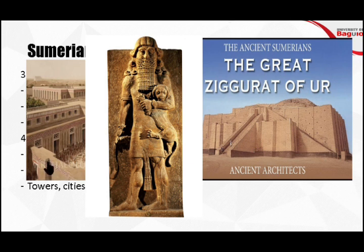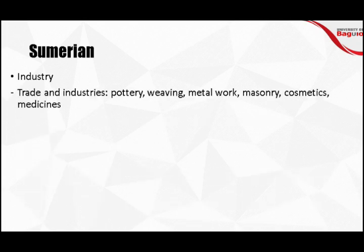Sumerians were also good in industry. They already introduced the concept of trade, and were skilled in pottery, weaving, metalwork, masonry, cosmetics, and even medicines. They had their own way to cure diseases using traditional medicines and herbs. However, not all diseases could be cured with these traditional plant-based remedies during the ancient time.